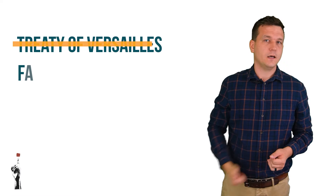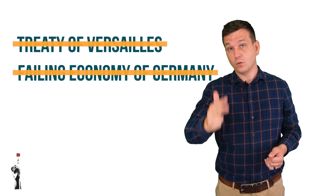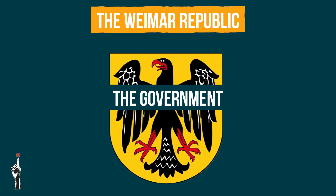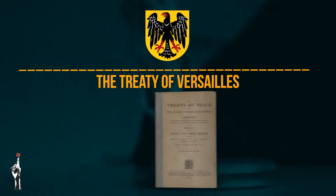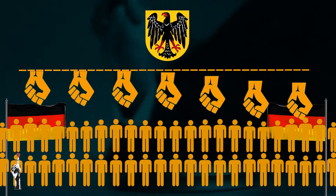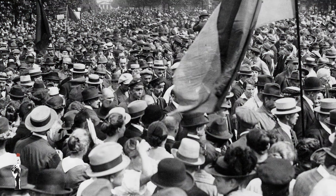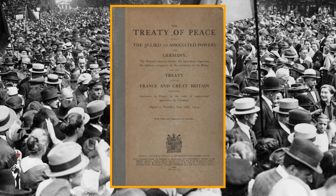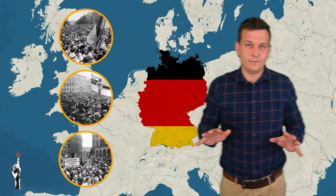Now moving over to the governing body of Germany after World War One — the Weimar Republic. The Weimar Republic was the government that ruled Germany after World War One, and this government was responsible for implementing the Treaty of Versailles. The government was forced to impose this harsh punishment on its own people. As a result, the Weimar Republic was hated by many Germans. Politically, what you need to remember is that after World War One, Germany's government and political landscape was unstable.